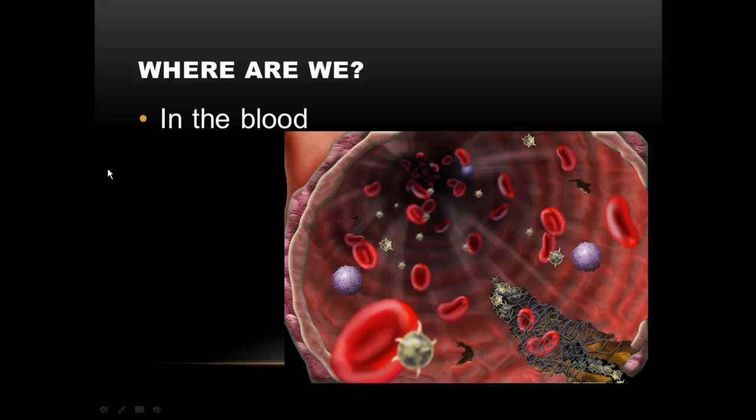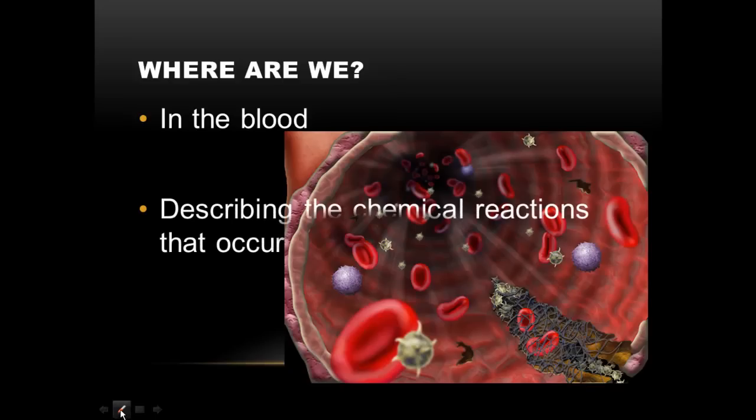We're going to be talking about these reactions in two locations. We're going to be talking about the chemical reactions that occur at your pulmonary capillaries, so the reactions that describe external respiration. And then we're going to be talking about the chemical reactions that occur inside your body, at your body capillaries, your systemic capillaries, and we call these chemical reactions internal respiration. So we're in the blood. We're talking about chemical reactions happening in two different spots.